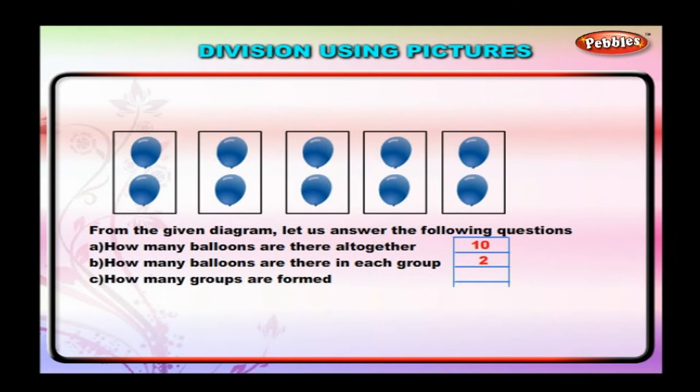1, 2, 3, 4, 5. How many 2's are there in 10? 5. Therefore, 10 divided by 2 is equal to 5.